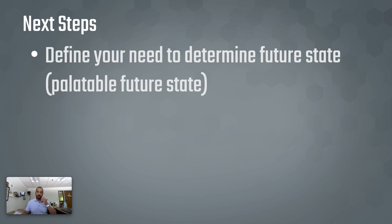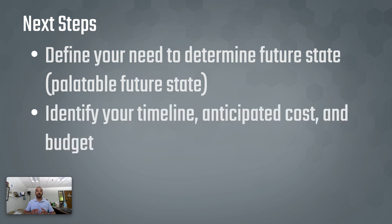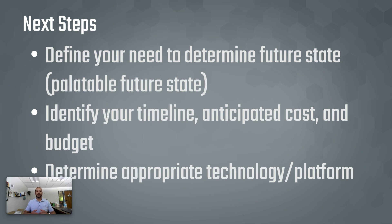So where do you go from here? There are some next steps you can take. First, you need to define your need and your future state — a palatable future state. Determining what you need to do in the immediate now versus what you need to do a couple of years from now are different things; however, they should be considered in a one-to-three-year plan for management infrastructure. You have to identify your timeline for when you need functionality to be operational, what the anticipated cost would be, and how that aligns against your budget. Finally, you can determine the appropriate technology or platform required to meet your need or future state.